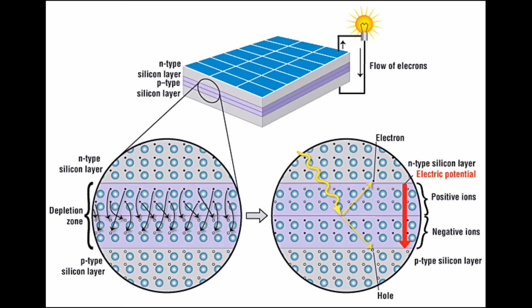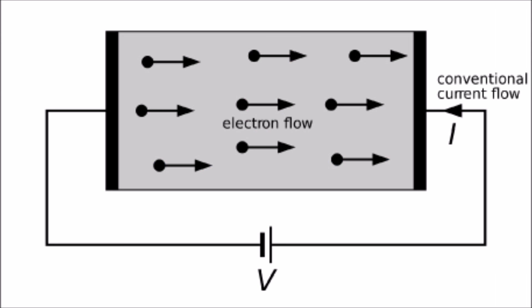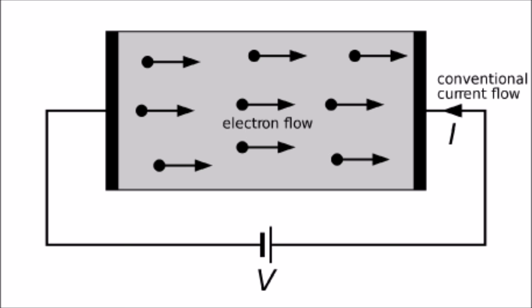So when sunlight enters the cell, it knocks free electrons from both wafers, which are pushed out by the electrical field. All of these free electrons are collected by metal plates, and then DC electricity flows out of the solar panel.